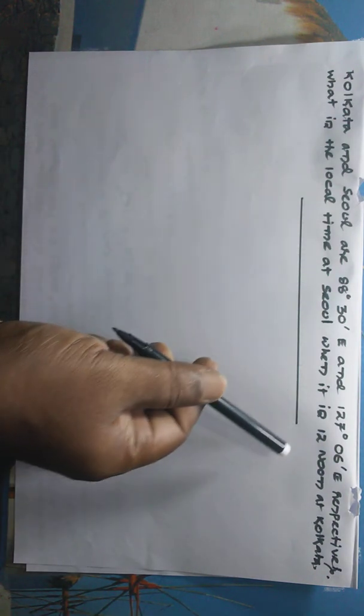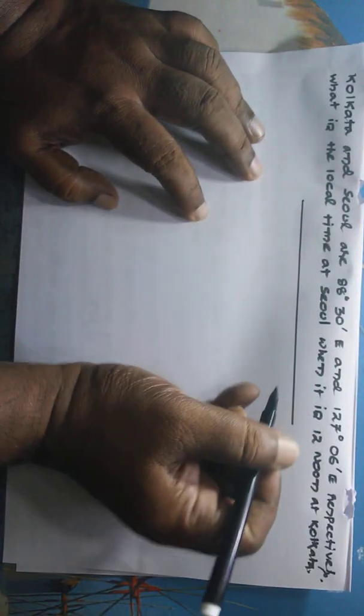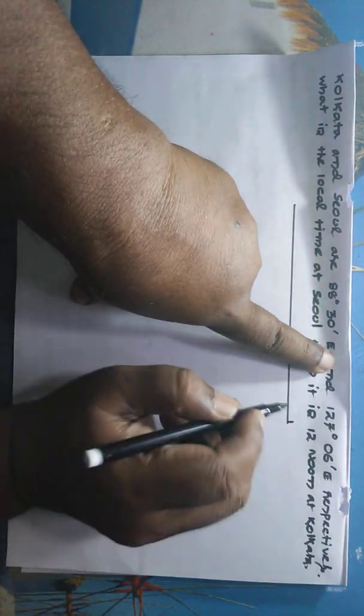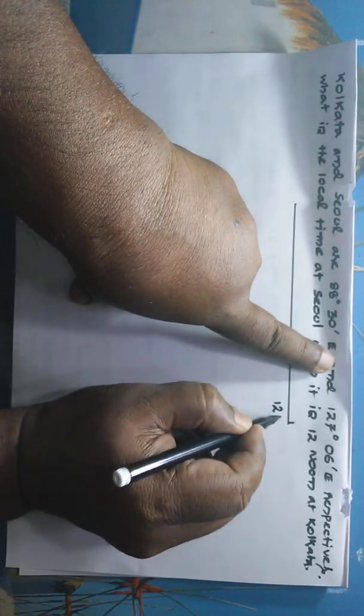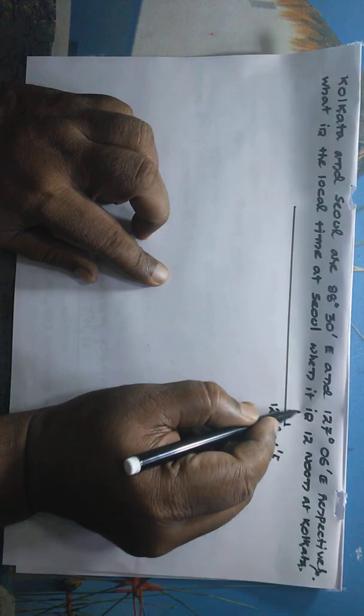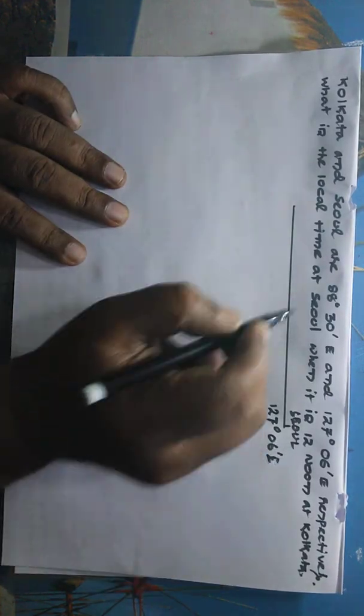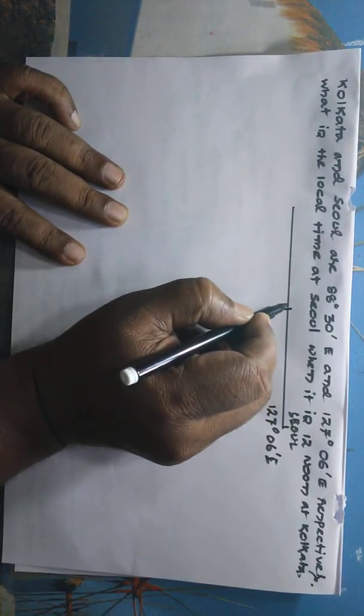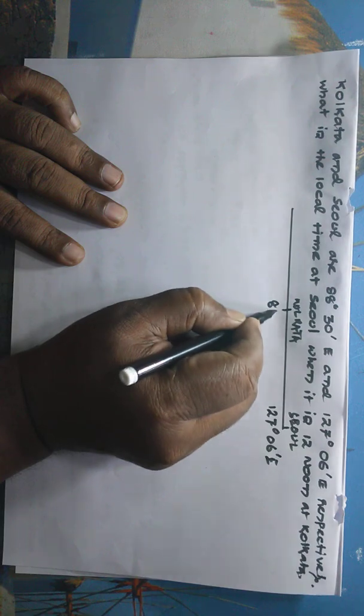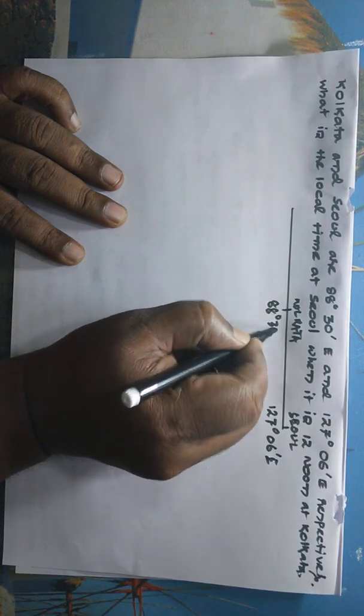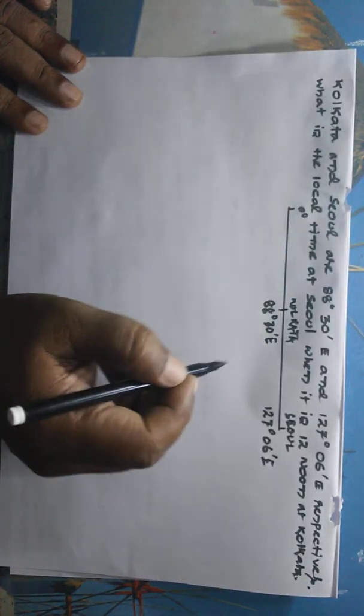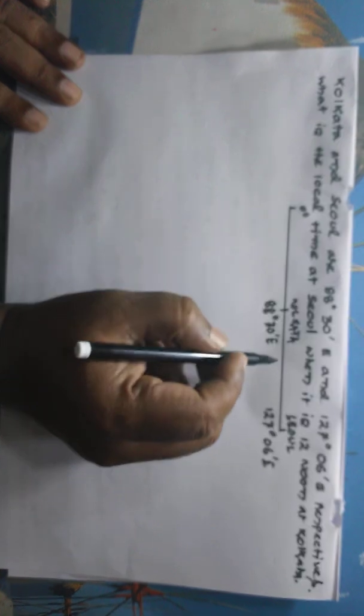Now in the chart that we have to make, Seoul, as it is located further east at 127 degree 6 minute east, that is Seoul. Kolkata will be somewhere here, Kolkata 88 degree 30 minute east, and of course zero degree will be located further on this side.